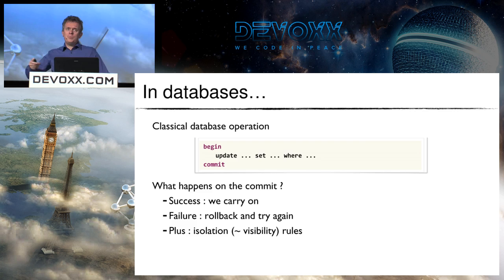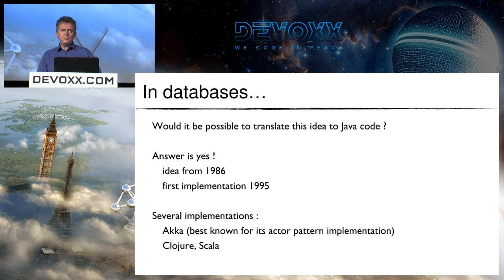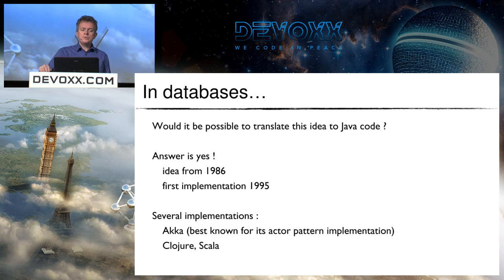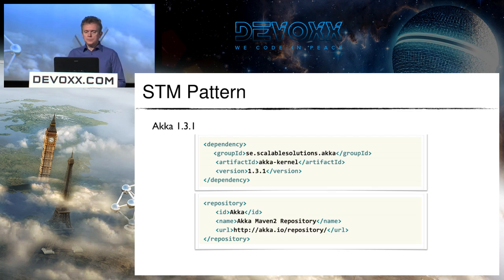Could we bring this transaction concept into Java code managed by the JVM? The answer is yes, and this idea has been around since 1986. There are several implementations. The one we'll look at is the Akka implementation — Akka is best known for its actor pattern, but it also has STM support. There are also implementations in Clojure and Scala.